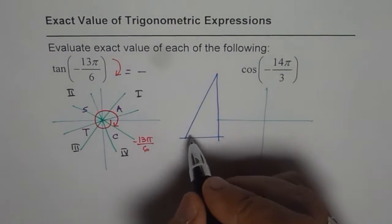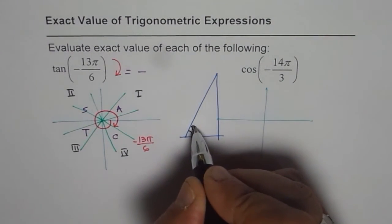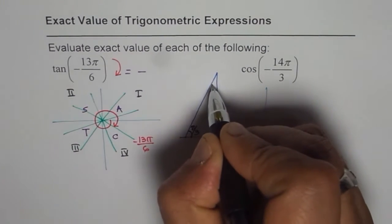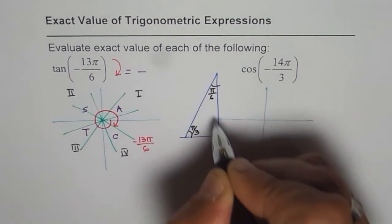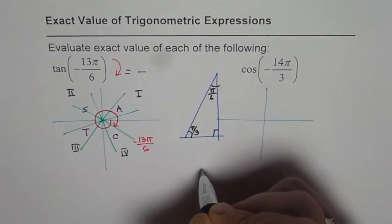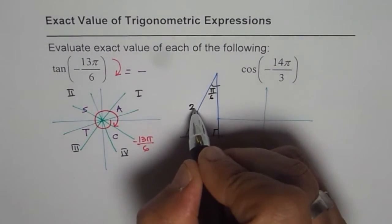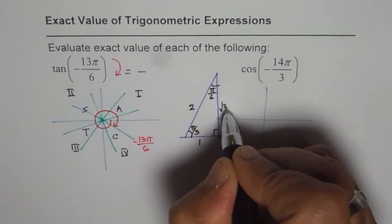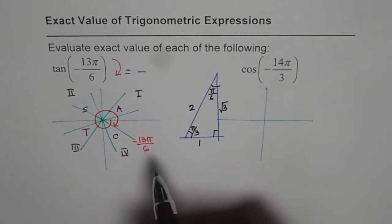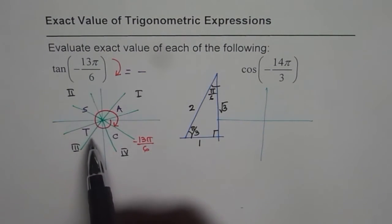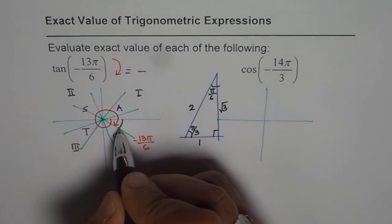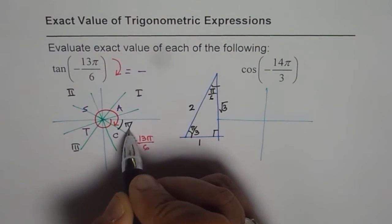In the special triangle, this angle is π by 3, this is π by 6, and this is π by 2. And the lengths are 2, 1, and square root 3. Acute angle is this angle, which is π by 6.